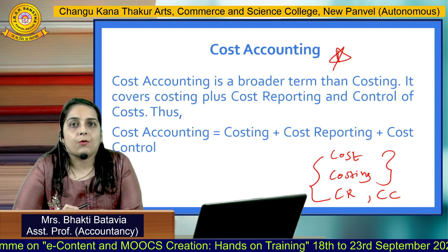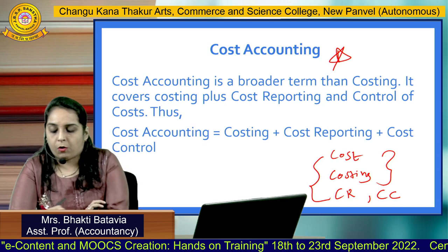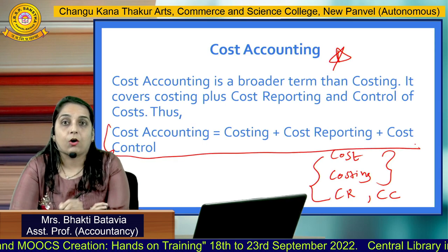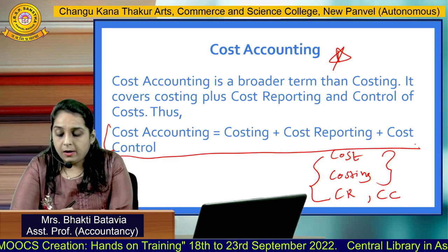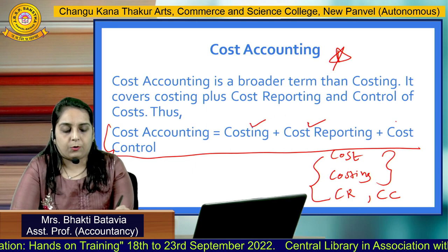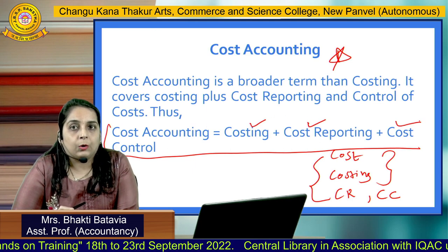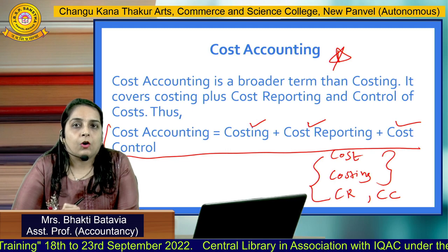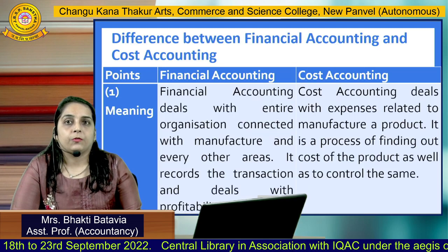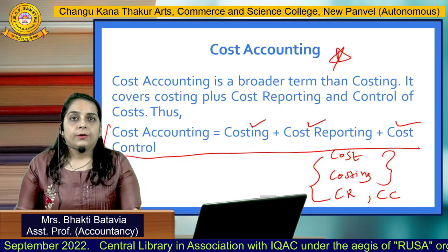Cost Accounting is a broader concept which involves all these elements combined. As you can see on the screen, Cost Accounting equals Costing plus Cost Reporting plus Cost Control. This is what becomes Cost Accounting. I hope these four elements are now clear to you.